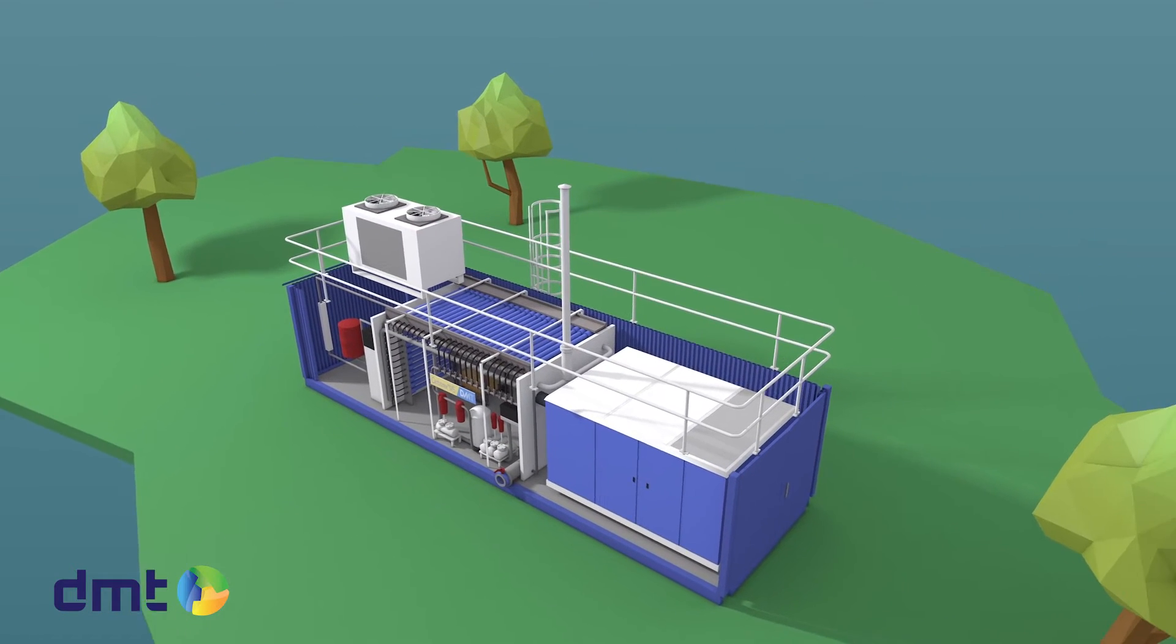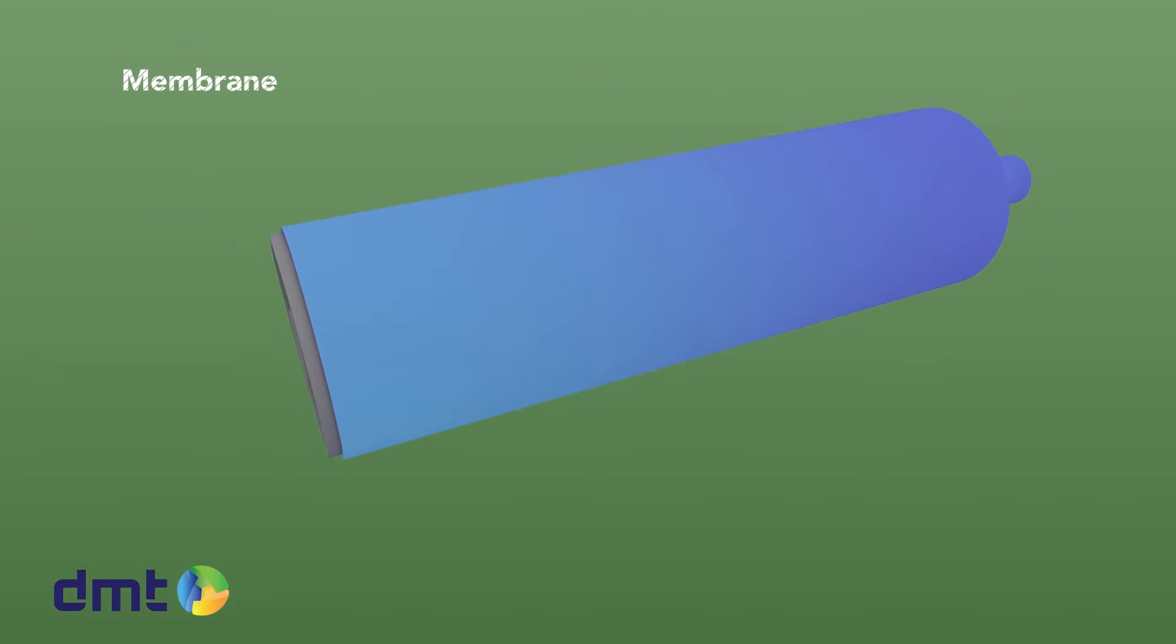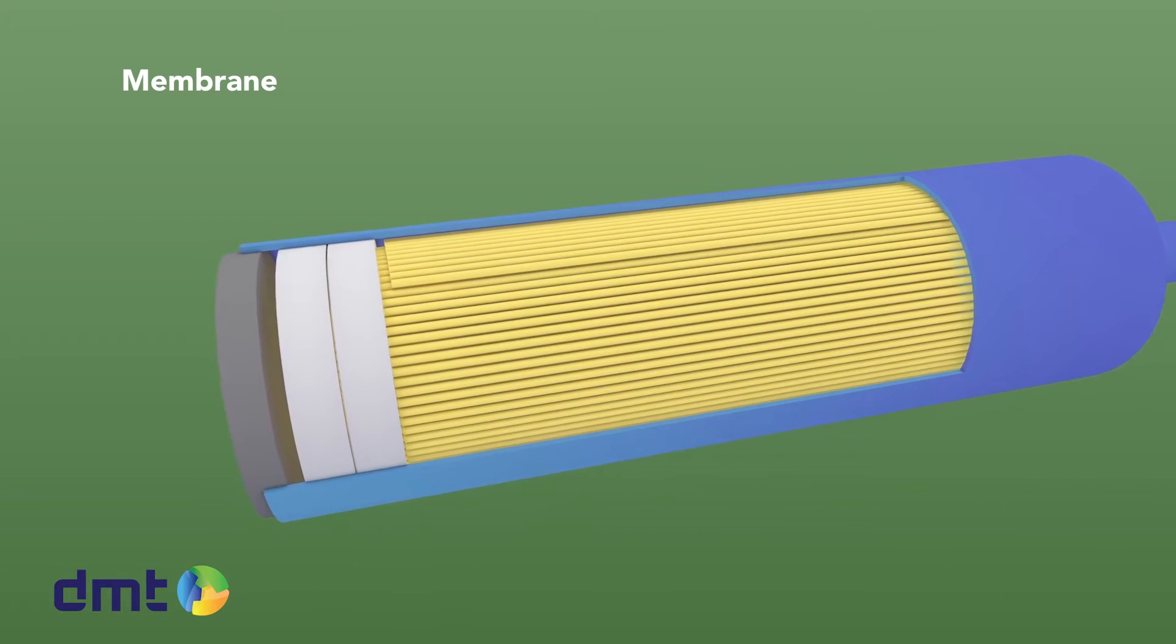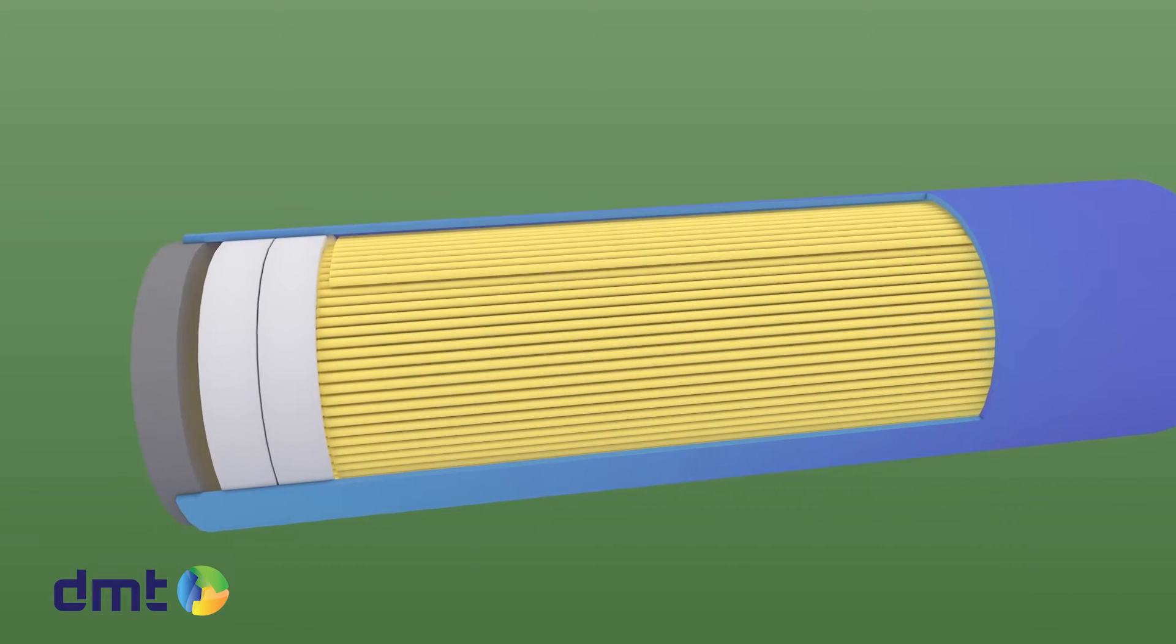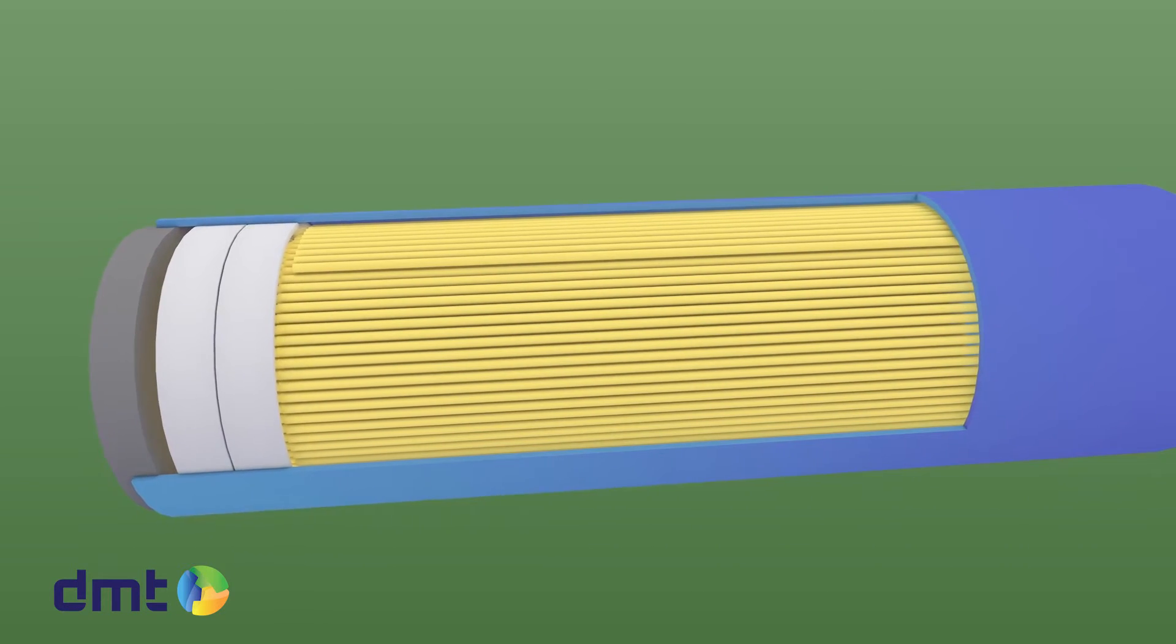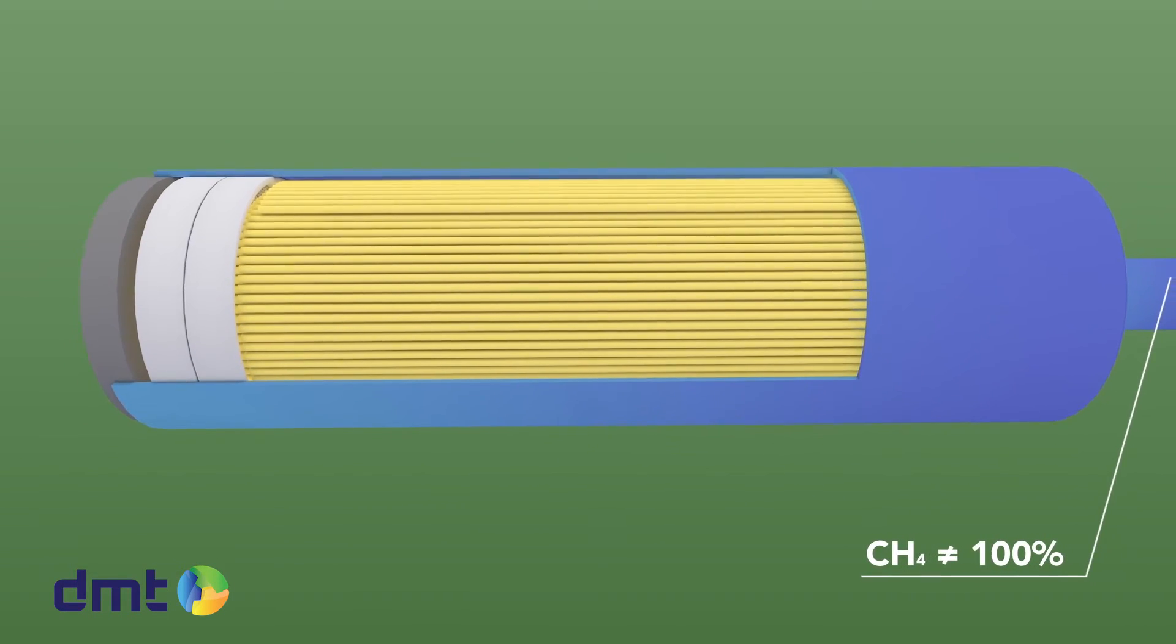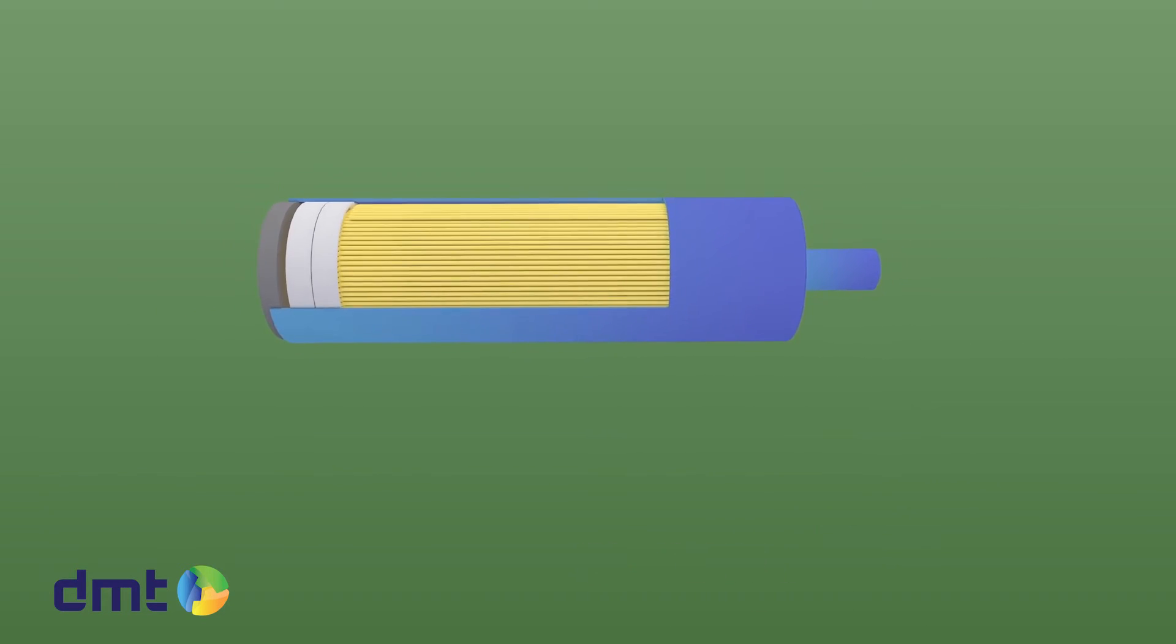One membrane contains hundreds of hollow fibers. The Carborex MS contains a multitude of membranes. Depending on the inlet flow, the amount of membranes inside the Carborex MS can vary. Even though a membrane separates CO2 from CH4, the selectivity of one membrane is not 100%. This means that at the end of one membrane, the methane flow still contains a certain amount of carbon dioxide.